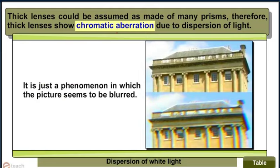Chromatic aberration is a phenomenon in which the picture seems to be blurred.